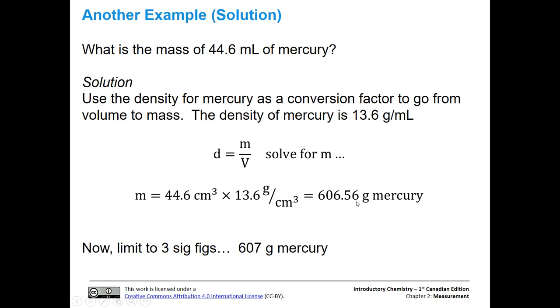Now, we have too many digits there. Our density is 13.6, that's three significant figures. We need to limit our answer to three significant figures. So one, two, three. The next number is five, so we're going to round up to 607 grams of mercury.